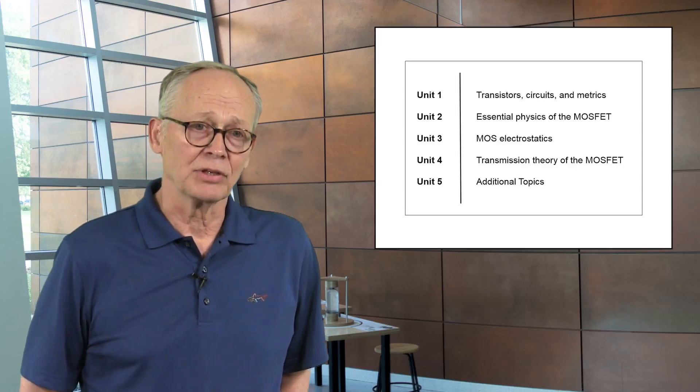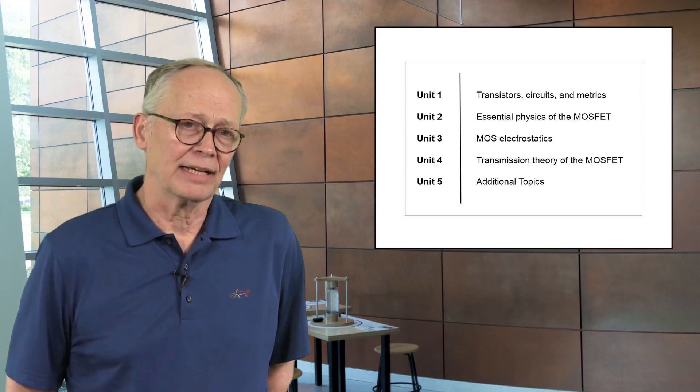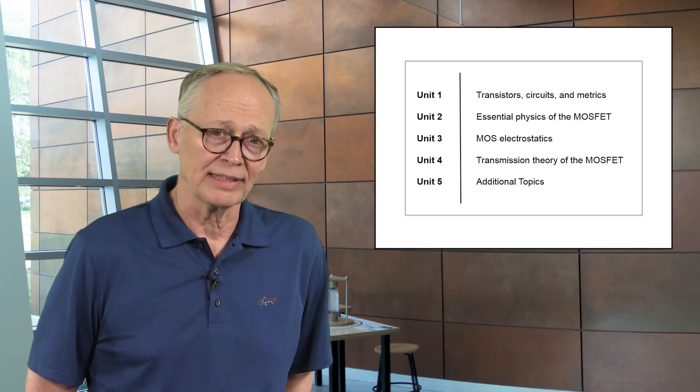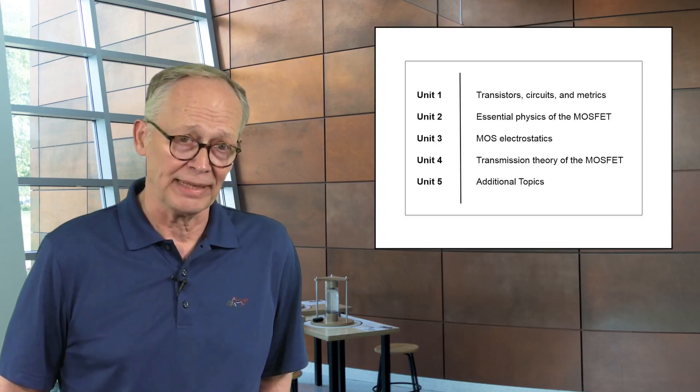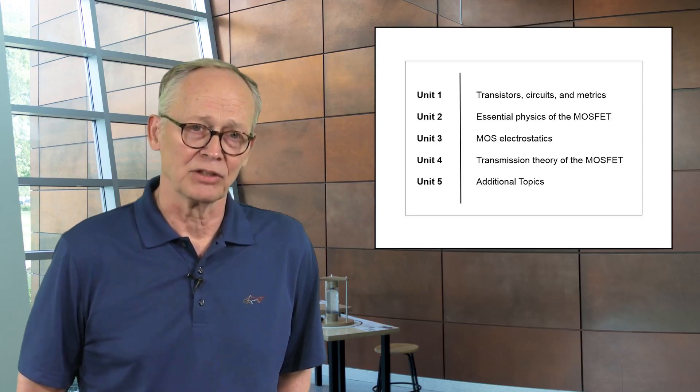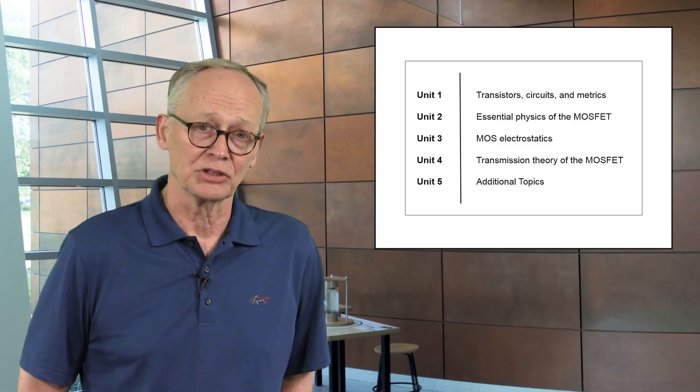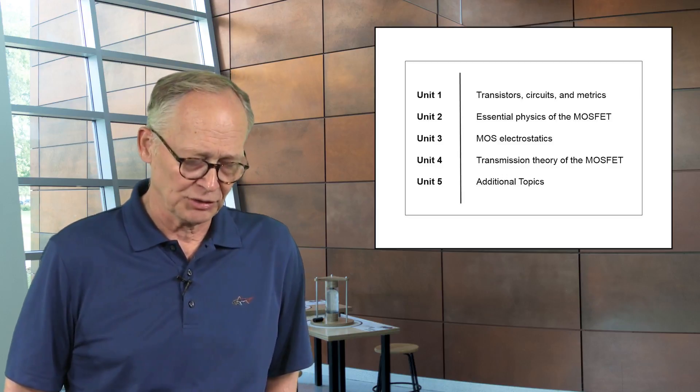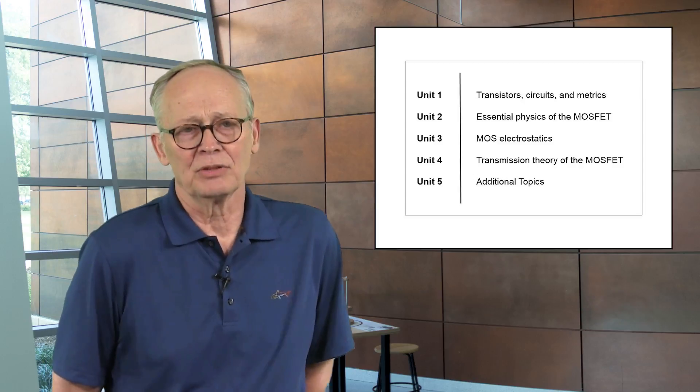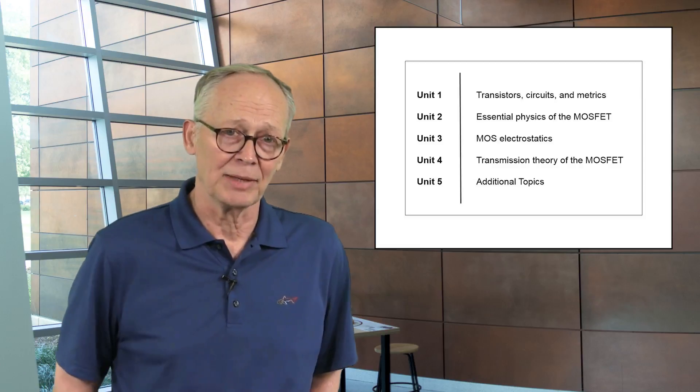The fourth unit of the course is really what's special about this course. Here we'll use an understanding of current flow at the nanoscale that has been developed over the past 10 or 20 years and we'll apply this to MOSFETs and learn how current flows from long channel lengths of a micrometer down to short channel lengths of 20 or so nanometers. And in the fifth unit we'll talk about a few other topics, the limits of transistors and some other types of transistors.